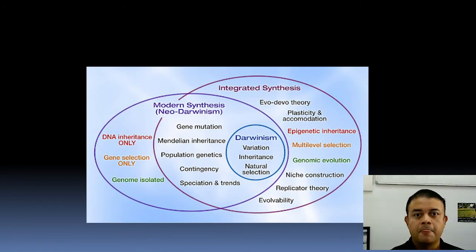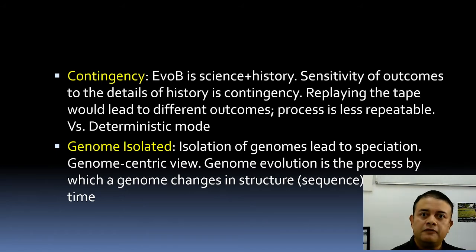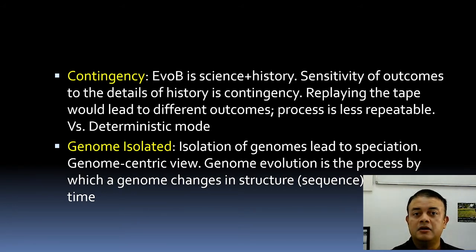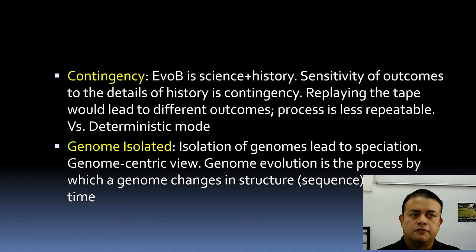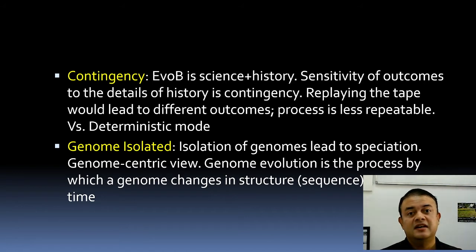Epigenetics, as we know, is beyond genetics — it concerns gene expression levels. Factors like methylation can affect what is expressed. Contingency is about history, because evolutionary biology is part science, part history. In historical sciences, certain constraints apply to evolutionary biology that are fundamental but often neglected by evolutionary biologists. Stephen J. Gould's essays discuss the importance of contingency in evolutionary biology. Contingency refers to the sensitivity of outcomes to the details of history.